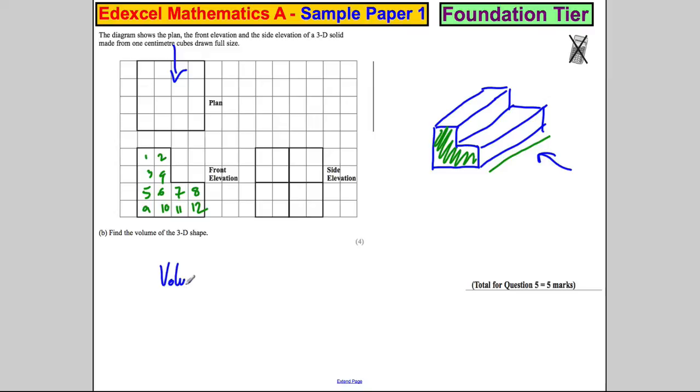So the volume is going to be 12 multiplied by how far back this is. Looking at the side, it's 1, 2, 3, 4 back. So you multiply it by 4 and get 48. And the unit of volume would be not centimeters, not centimeters squared, but centimeters cubed for that question. And we're done.